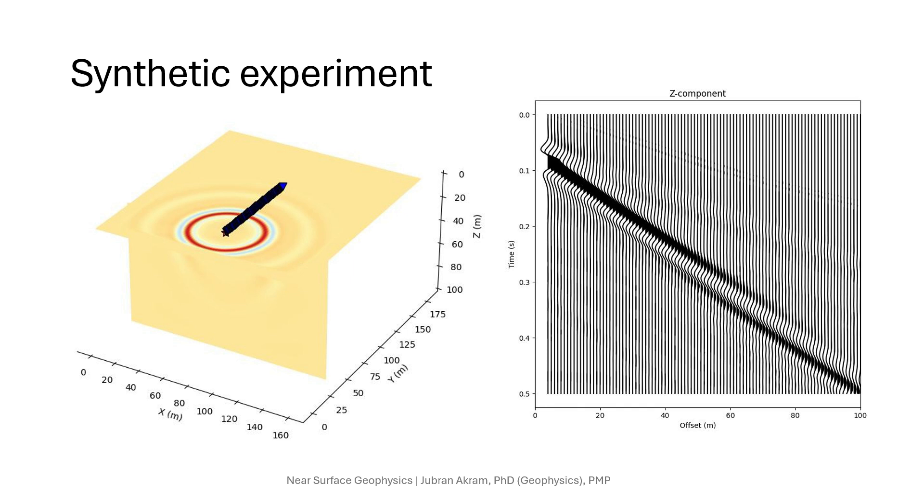In practice we often apply a preprocessing step which involves muting bad traces or applying masks to focus on the Rayleigh wave part of the record to improve the analysis on the field data. However we don't do that here and use the full waveform record in the next step, as the purpose of this video is to walk through the data analysis pipeline and not optimize the processing.